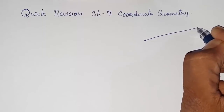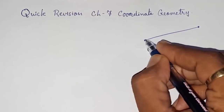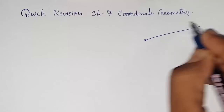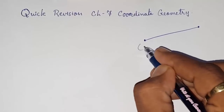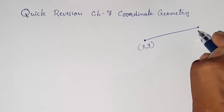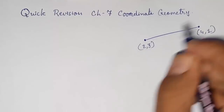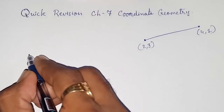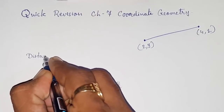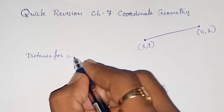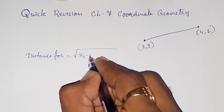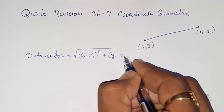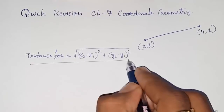The distance formula is used to find the distance between any two coordinates on the Cartesian plane. Suppose this is your x-axis and y-axis, and two points are given on that plane. If they have given you the coordinates of these two points, then you can find out the distance between them using the distance formula: under root of (x2 minus x1) whole square plus (y2 minus y1) whole square.